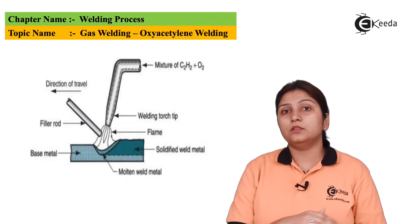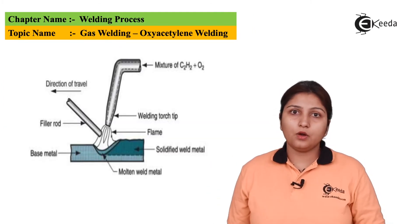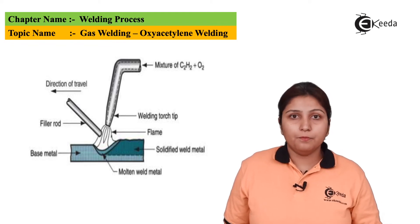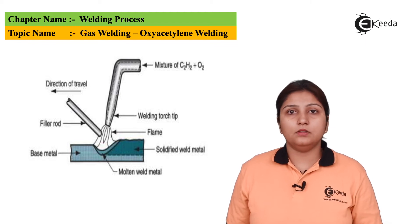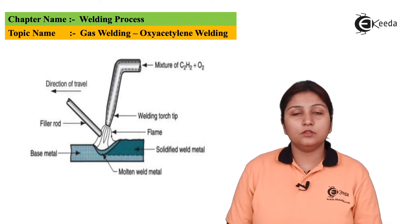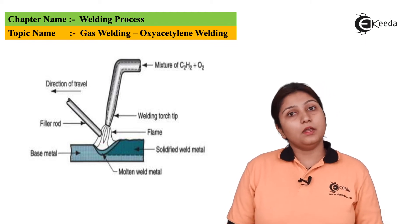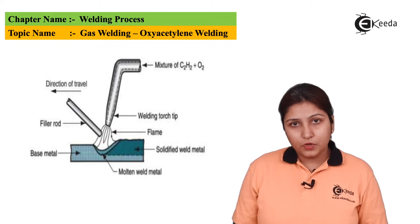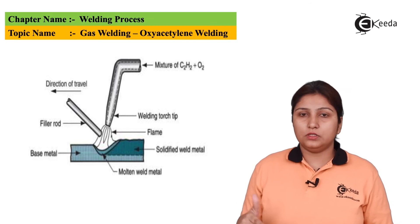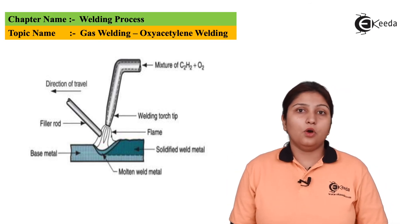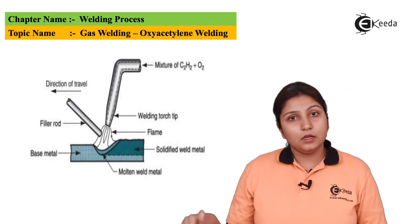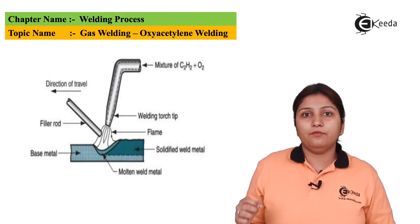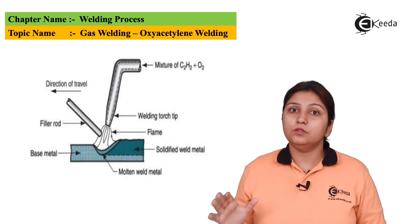In this diagram you can see there is a base metal and a filler rod — as mentioned, it can be used or not used. The filler rod enhances the welding or burning process but is not directly involved in the process. You can see there is a supply of acetylene and oxygen from a pipe welding the base metal in a particular direction, and in the end there is a solidified weld metal which is formed.